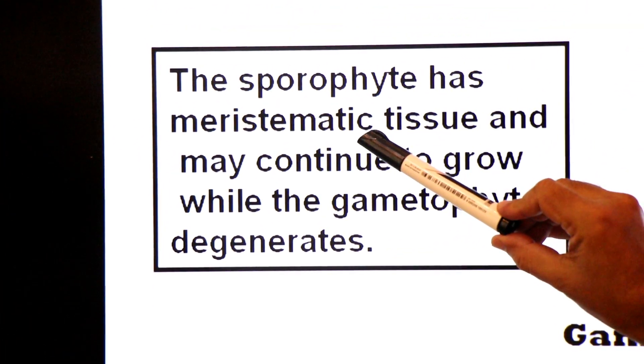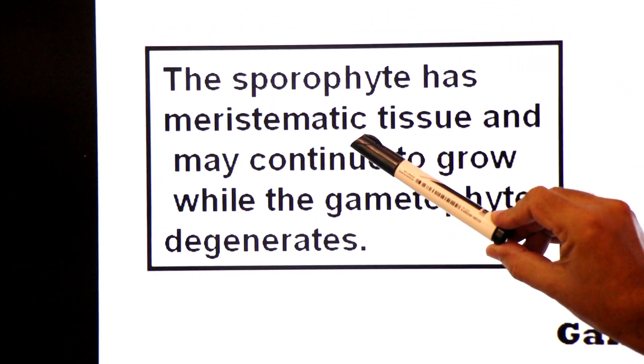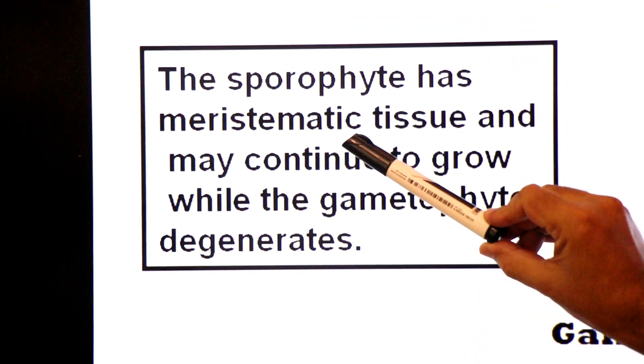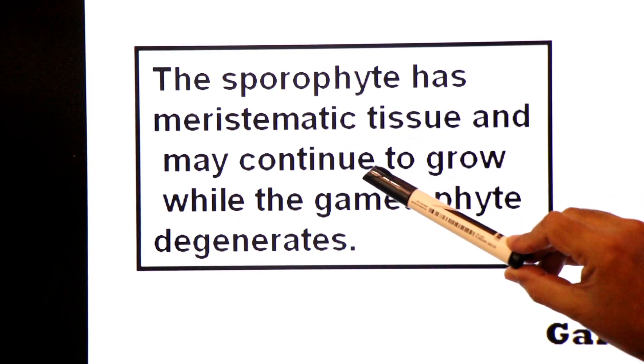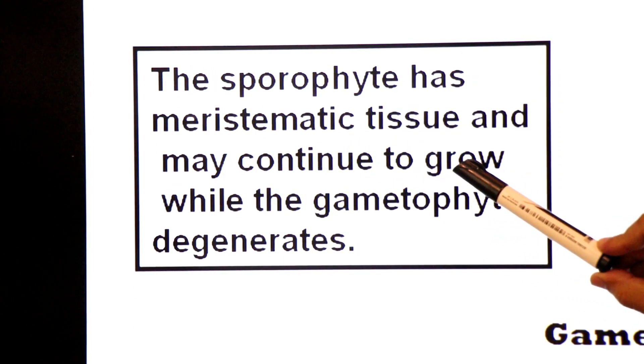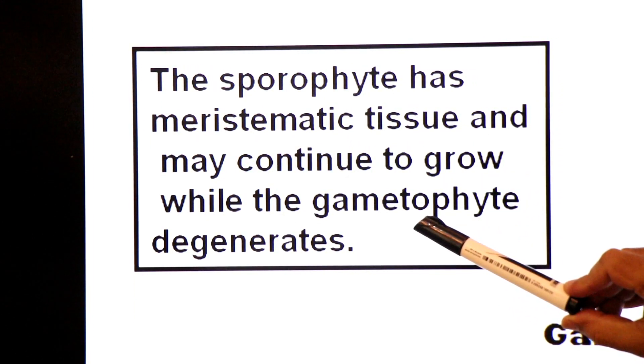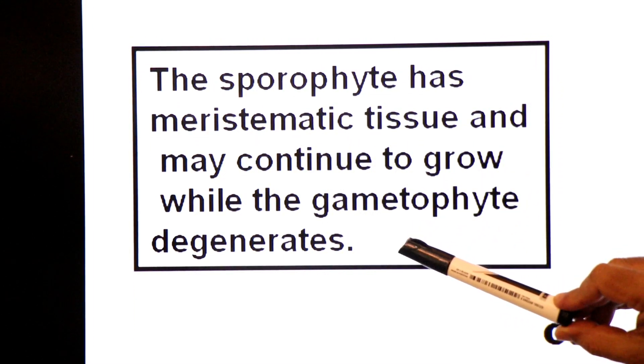The sporophyte has meristematic tissue — tissue capable of cell division — and may continue to grow even while the gametophyte degenerates, because it has meristematic cells.